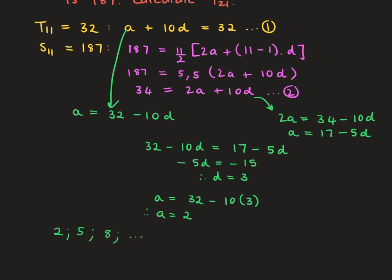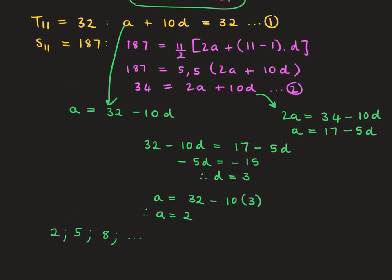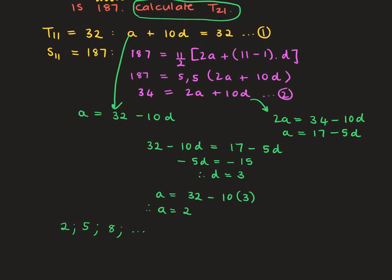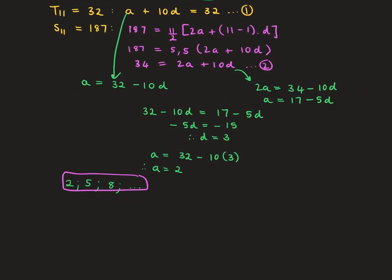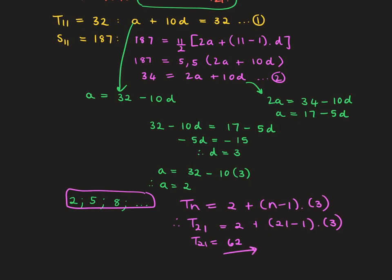We need to answer the question in full: calculate term 21. I'll work out the general term for this pattern. TN equals A plus (N minus 1) times D. Therefore, term 21 equals 2 plus (21 minus 1) times 3, which is 2 plus 60, so your final answer is 62.